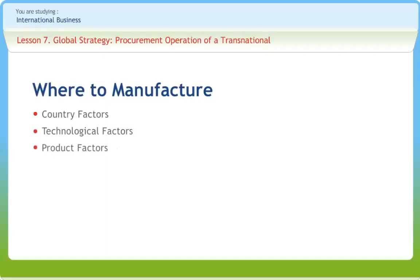Country factors include differences in political economy and national culture. Technological factors are concerned with manufacturing technology — the technology that performs a specific manufacturing activity. Product factors include value-to-weight ratio. There are two basic strategies for locating manufacturing facilities: concentrating them in a centralized location and serving the world market from there, or decentralizing them in various regional or national locations that are close to major markets.